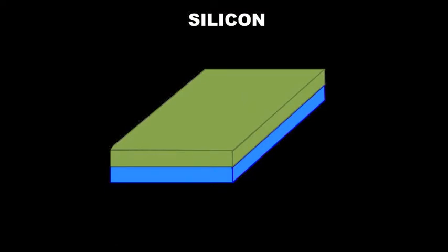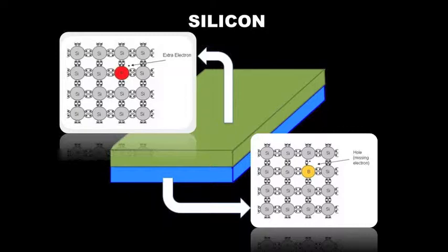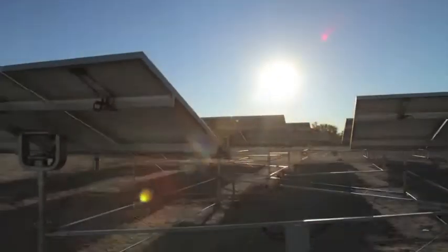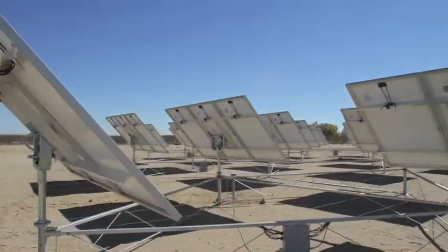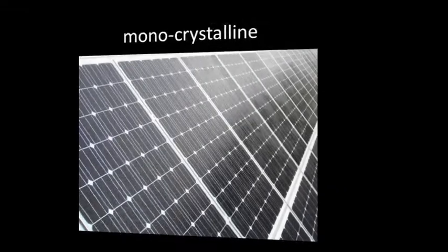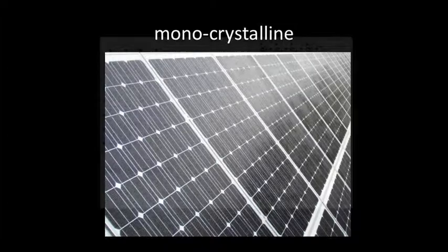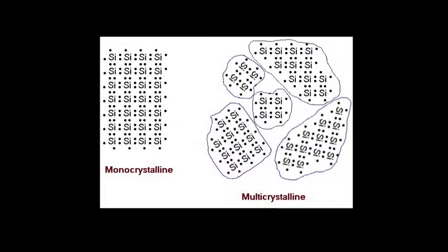So hopefully now you understand that impurities, for example phosphorus and boron, when implemented properly make silicon the ideal material for use in solar panels. In addition to the implementation of impurities, solar panels can be made more efficient when the crystalline structure is monocrystalline and not multicrystalline. Monocrystalline silicon in solar panels is more efficient in energy conversion because of its well-organized crystal structure.